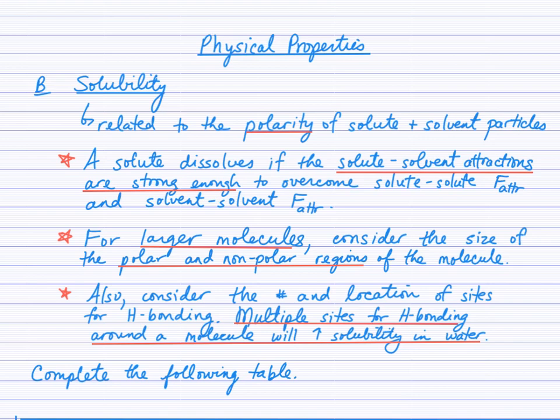If there's a greater polar region, then it's expected to be more soluble in water and less soluble in oil. The third point: consider the number and location of sites around a molecule that have the capacity for hydrogen bonding. Having an OH or NH somewhere in a large molecule doesn't necessarily mean it will be very soluble in water. For a smaller molecule with an OH present, that will be very impactful. For larger molecules, look all around them — left, right, top and bottom — and see how water molecules could interact with that solute.